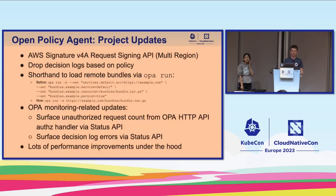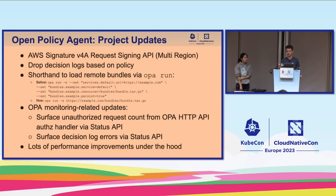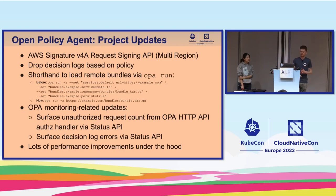In addition to language-related features, we have support for the AWS signature request signing API — a new function useful if you're loading bundles over the bundle service API from S3 or something similar. We have a new way of defining which decisions are logged based on policy, and shorthands to run OPA with an example or a remote bundle to make examples easier. Various monitoring-related updates around logging of unauthorized requests, and various other performance improvements under the hood.